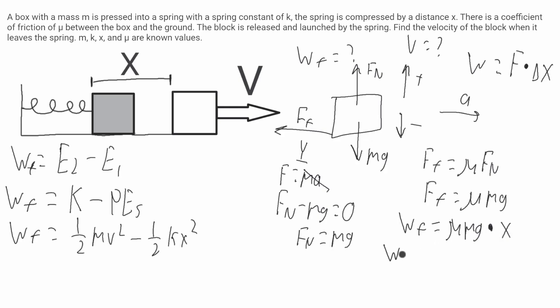Now, the definition of the dot product says that the work of friction will be equal to the magnitude of mu mg times the magnitude of the displacement times cosine of the angle between them. We'll call this theta.